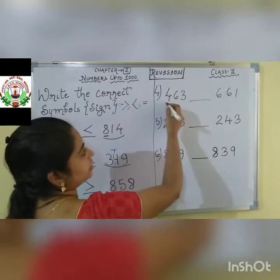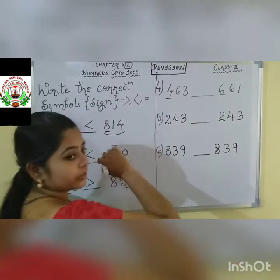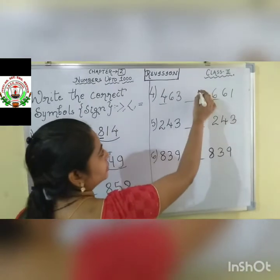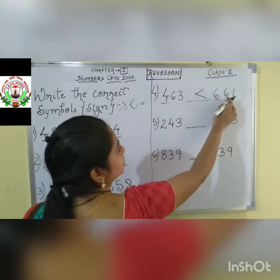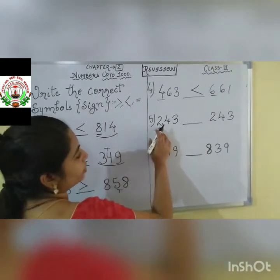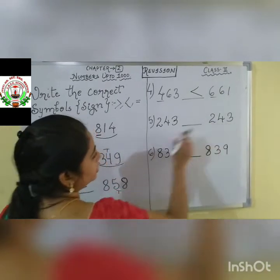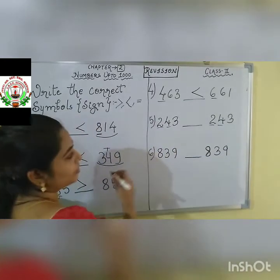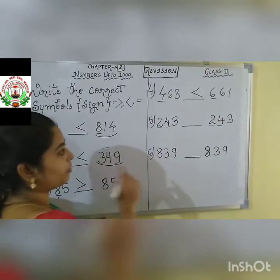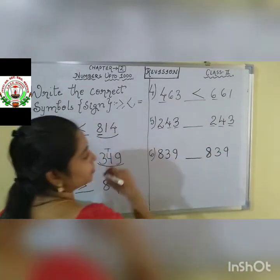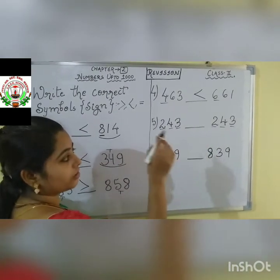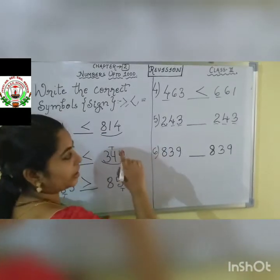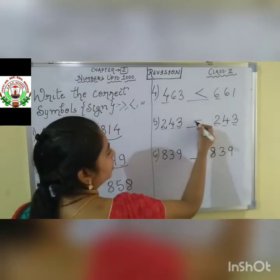Next question: 463 and 661. See the hundreds place: 4 and 6. Which one is greater? 6 is greater. So the whole number 661 will be greater. Next: 243 and 243. Compare hundreds place — both are 2. Tens place — both are 4. Ones place — both are 3. So 243 and 243, both numbers are the same. We will put an equal mark, equal sign like this.